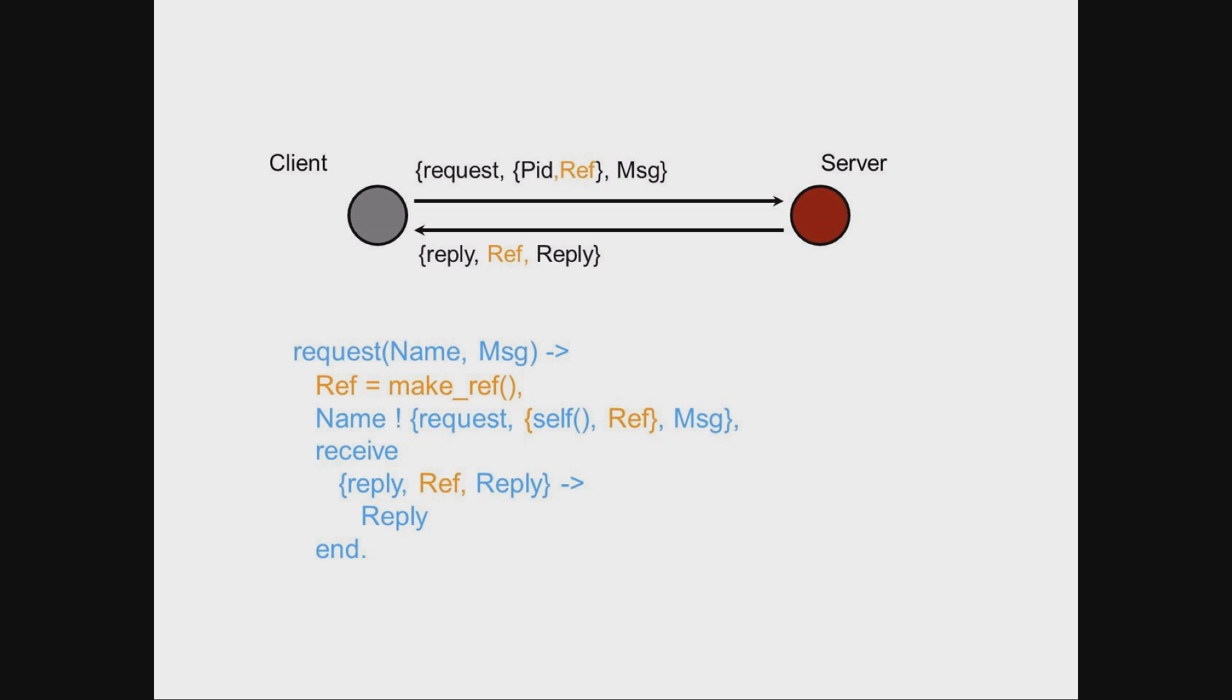In our request function, where we pattern match in our receive clause, the variable ref is already bound. That guarantees that only the replies to our request are pattern matched. Any other requests which follow a similar format will have a different reference and will remain in the mailbox and not be handled.